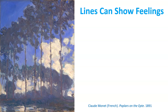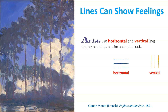Did you know that lines can show feelings? Study this painting by the artist Claude Monet. Where do you see vertical lines? If you were thinking the artist used vertical lines for the trees, you are correct. What kind of line did the artist use for the shoreline at the bottom of the painting? If you were thinking horizontal line, you are correct again. All the lines in this painting work together to give a feeling of stillness and quiet. Artists use horizontal and vertical lines to give paintings a calm and quiet look.